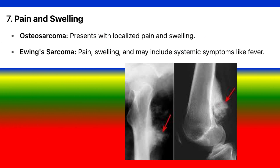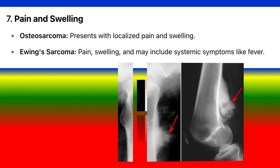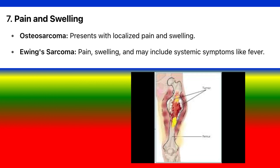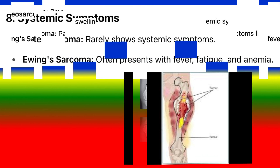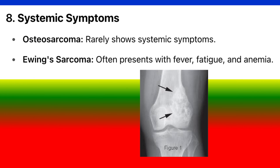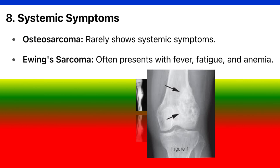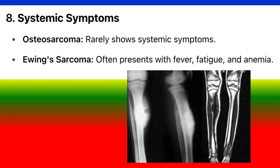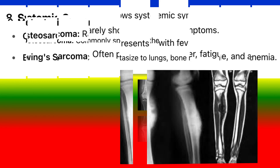7. Pain and swelling. Osteosarcoma presents with localized pain and swelling. Ewing's sarcoma: pain, swelling, and may include systemic symptoms like fever. 8. Systemic symptoms. Osteosarcoma: rarely shows systemic symptoms. Ewing's sarcoma: often presents with fever, fatigue, and anemia.